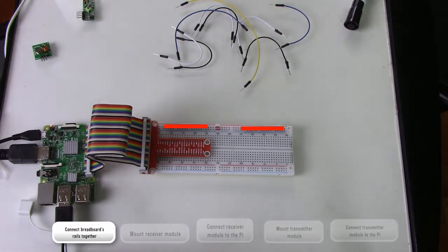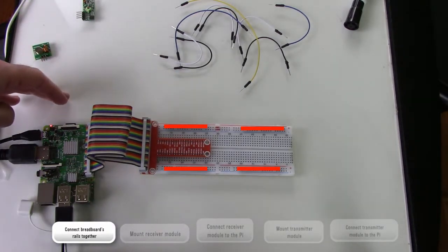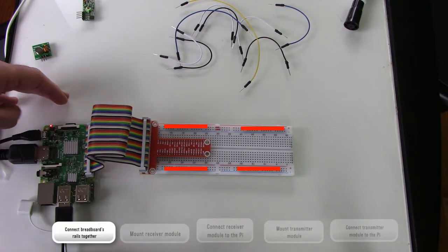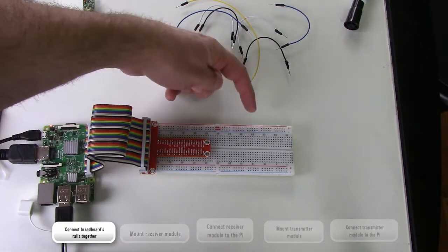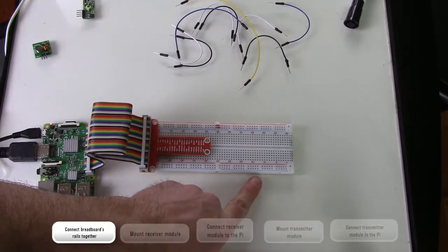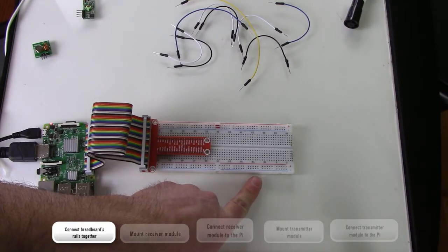There are four groups of rail connections on the 63 row breadboard we'll use, and each of the holes within a group are connected. But the four groups are not internally connected to each other. For this project we need all but the last group of four rails connected together.